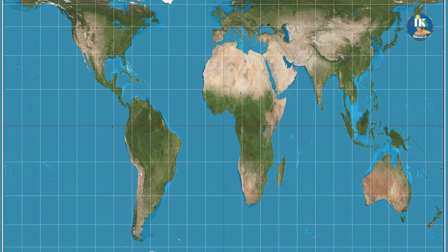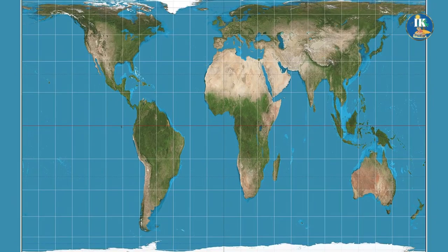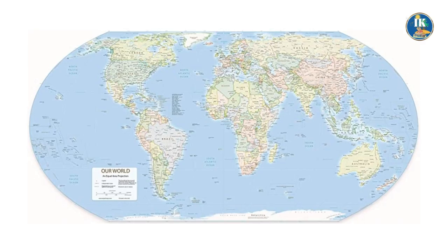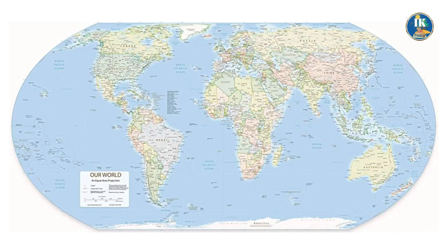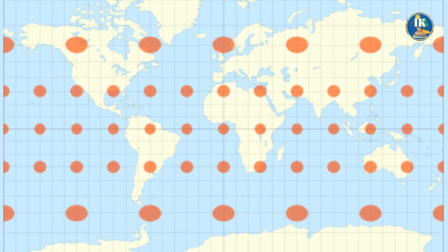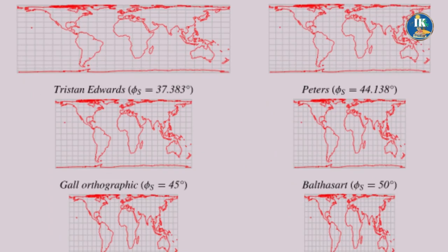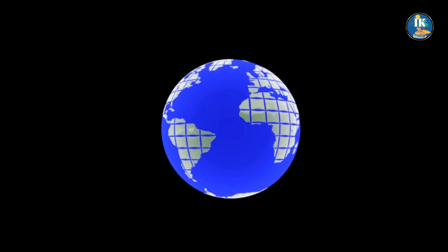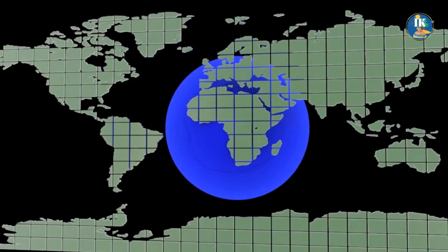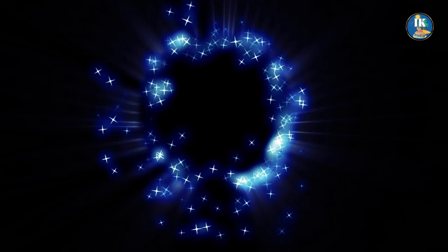Another alternative is the Gall-Peters projection, which is similar to the Peters projection but with a slightly different configuration of the continents. Like the Peters projection, the Gall-Peters projection is an equal area projection, providing a more accurate representation of the world. Both are examples of cylindrical equal area projections, where meridians and parallels are straight and perpendicular, creating a more uniform and consistent map. There are also other projections — such as the Robinson projection or the Winkel-Tripel projection — that try to balance both size and shape distortions, offering a more faithful representation of the world than the Mercator projection.